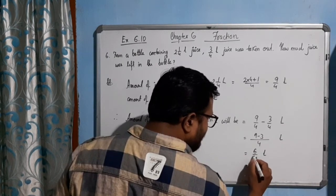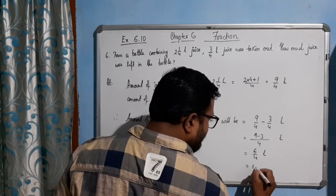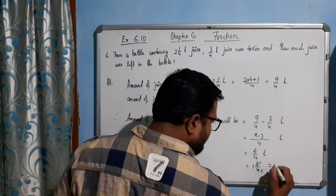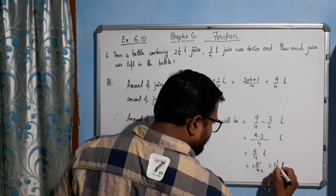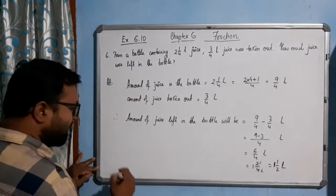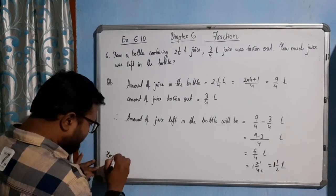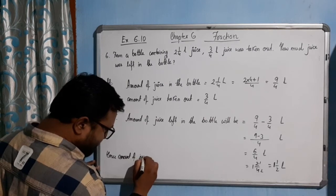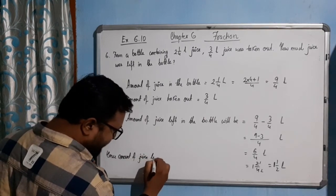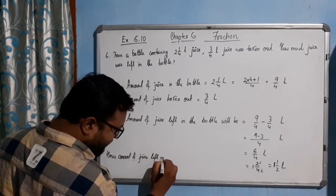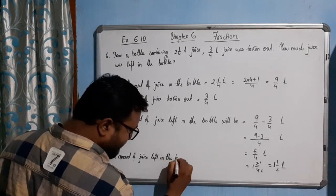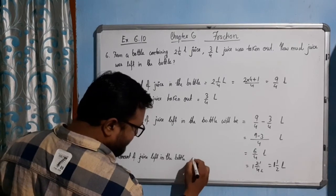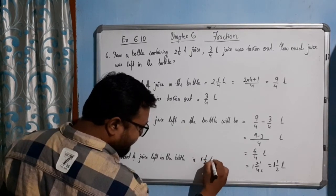That is 4 ones of 4, 2 by 4, that is 1 and 2, that is 1 and half liter. Hence, amount of juice left in the bottle is 1 and half liter.